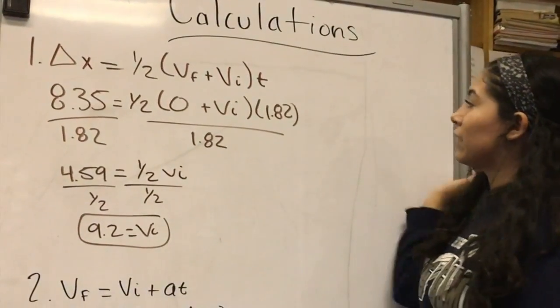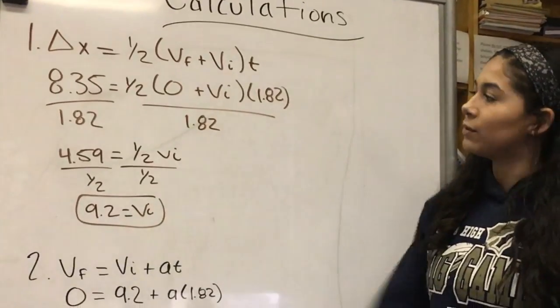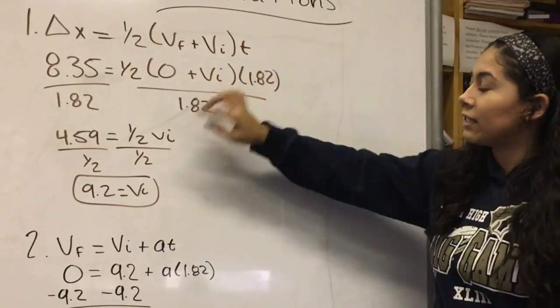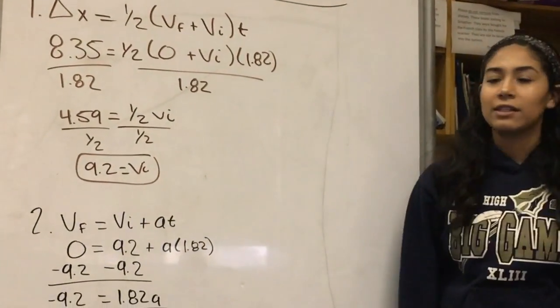So for time I put 1.82 then I had to divide 1.82 to both sides and then I got 4.59 and then I divided half and got 9.2 which that's our initial velocity.